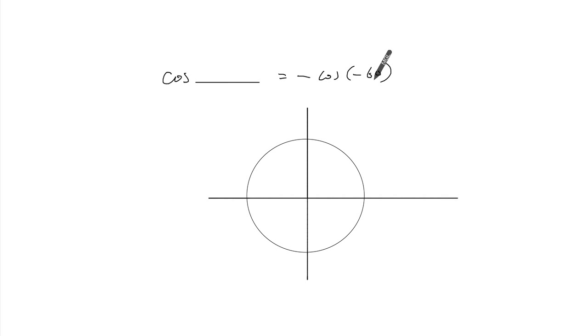Okay, so cosine of minus 60. We rotate minus 60 degrees from here like that. This portion right here is this value, it's this length right here.